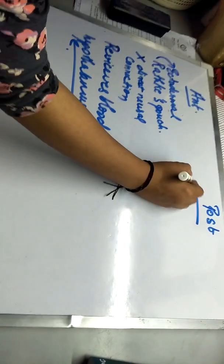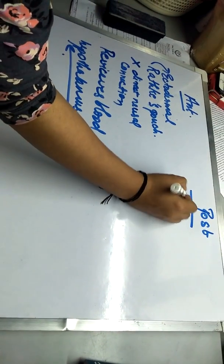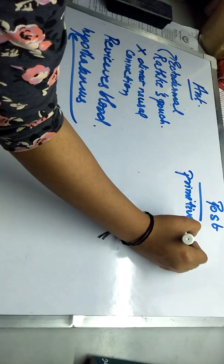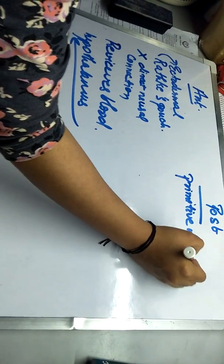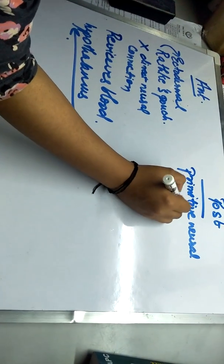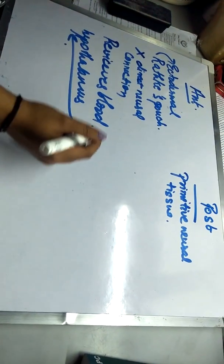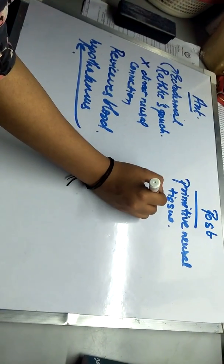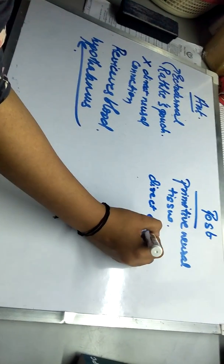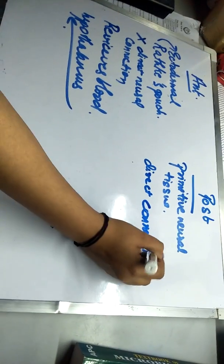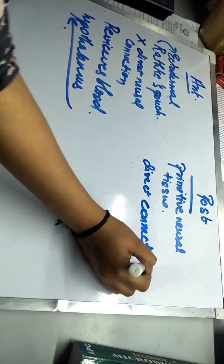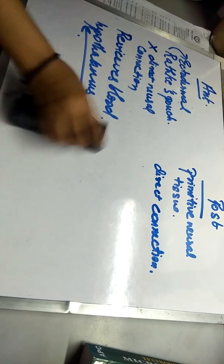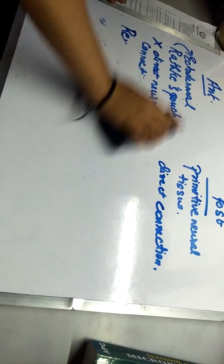The neurohypophysis originates from primitive neural tissue and has a direct neural connection. Now let us look at the histology.